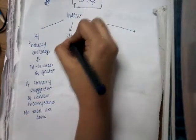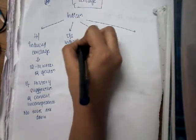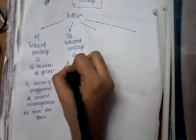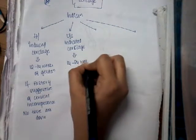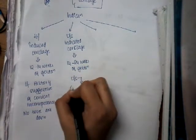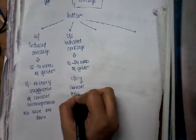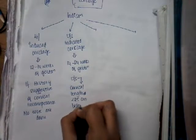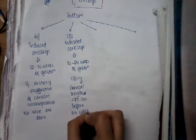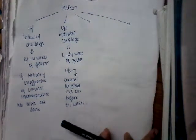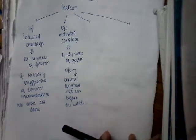The second type is ultrasound-indicated cerclage. Here the ultrasound has indicated it — we are not doing it based on history. This is done between 14 to 24 weeks of gestation. On ultrasound, you will see that the cervical length is less than 25 millimeters before 24 weeks. In such a case, there is an increased chance of pregnancy loss and preterm labor, and as a result we give the treatment of cerclage.